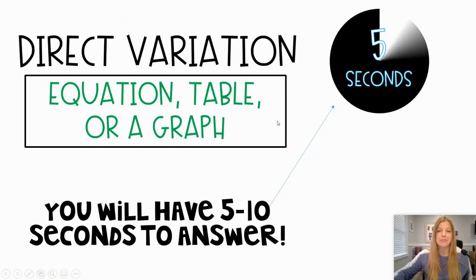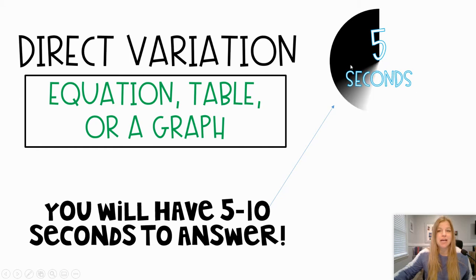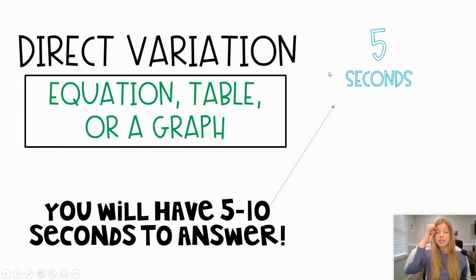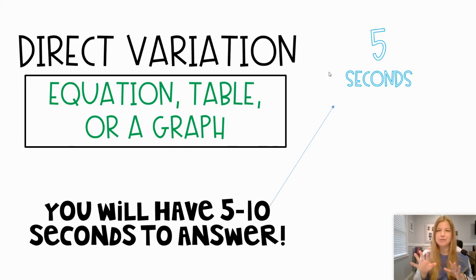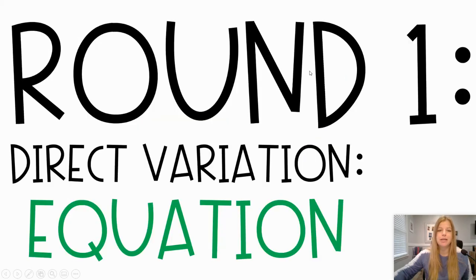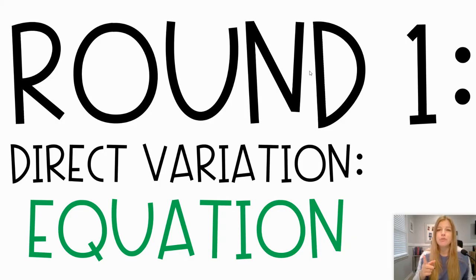You are going to have a five-second timer on the screen. I know that seems pretty quick, and you may be stuck on a couple of the first few before you get the hang of it, but these are going to be very, very quick questions. Round one is about determining just yes — is it a direct variation — or no, is it not? Remember the form for a direct variation is y equals kx.